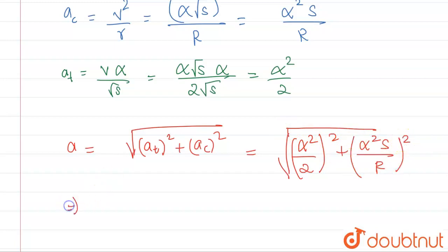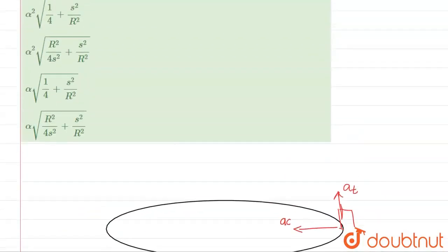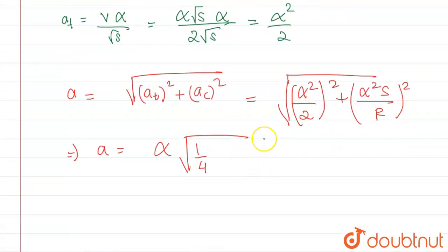So acceleration will come out to be alpha inside with 1 by 4. We have to check according to the options. Alpha square will come out.